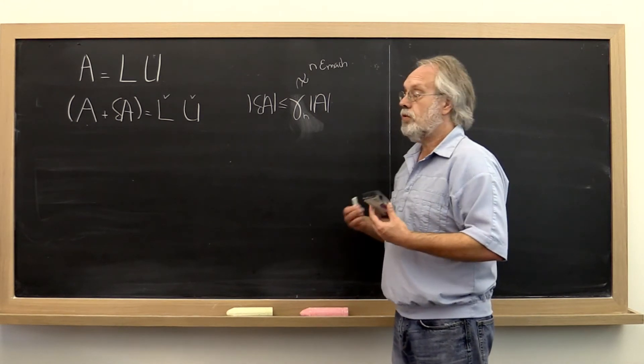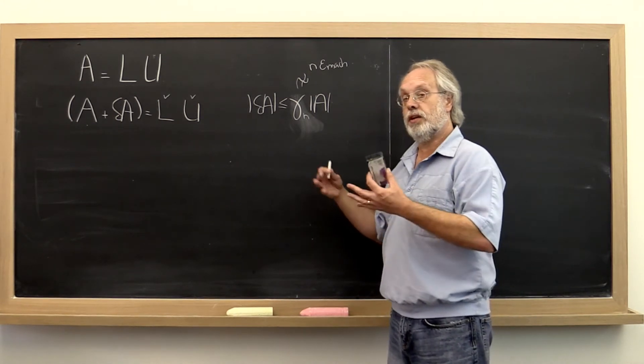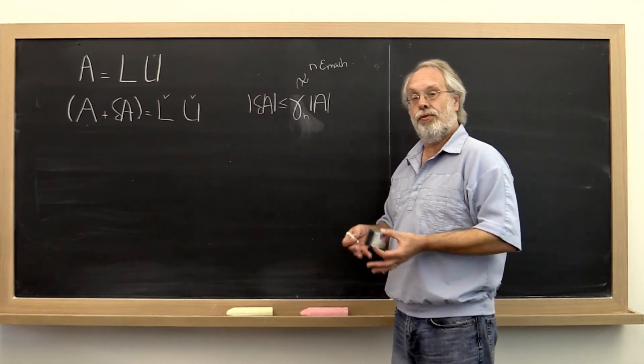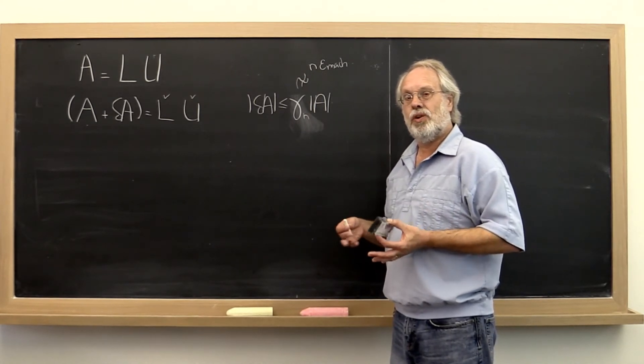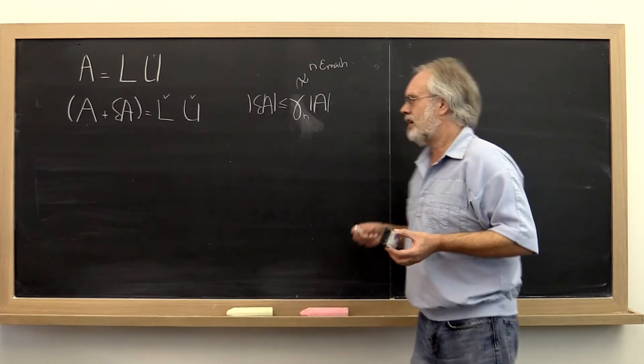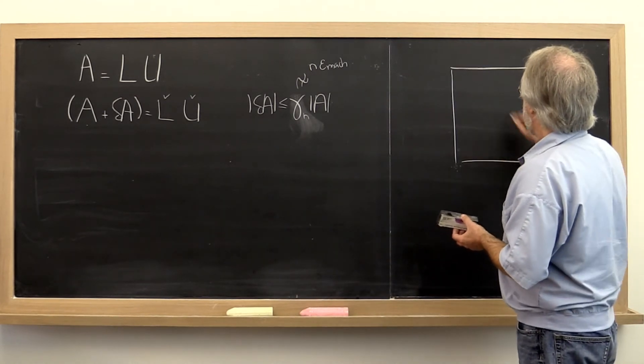And the one that is most convenient for doing this backward error analysis where things just kind of fall out the nicest is known as the Krout variant.